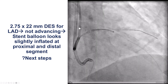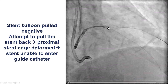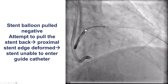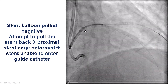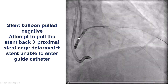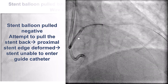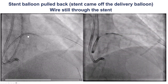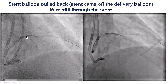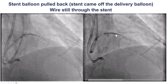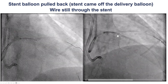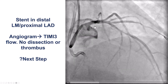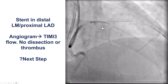What to do next? We cannot deliver it anymore. We tried to pull things back into the guide, but unfortunately the proximal edge of the stent was deformed and we were unable to get it back into the guide catheter. As we kept pulling, the balloon of the stent came back, but the stent remained in the left main — sticking out from the left main into the LAD. Fortunately, there was good flow and we did not compromise flow into the vessel.